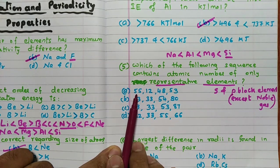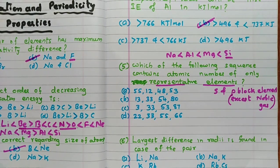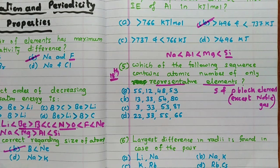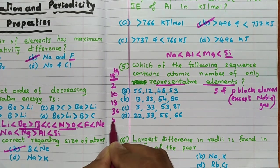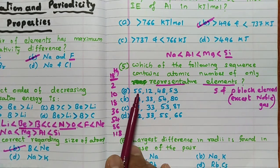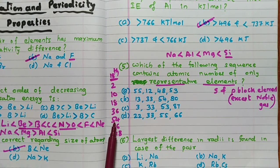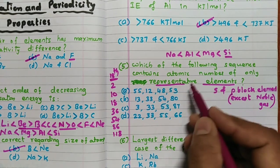In the 18th group, the atomic numbers are 2, 10, 18, 36, 54, 86, and 118 — these are noble gas elements. Now checking the options: 55 comes after 54, so 55 is S-block — allowed; 12 is magnesium, S-block; 53 is P-block because 54 is 18th group so 53 is 17th group. But 48 is just below zinc which is D-block, so 48 is also D-block — hence that option is not the answer. Then 13 is P-block (aluminum), 33 is P-block (15th group), but 54 is a noble gas — so that option is also not the answer.